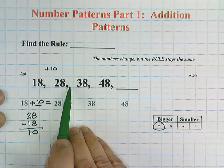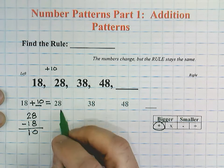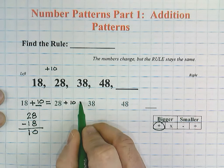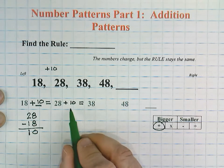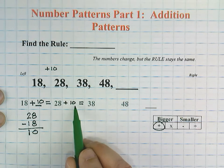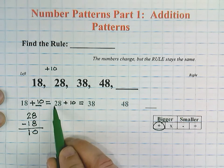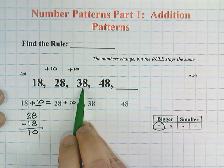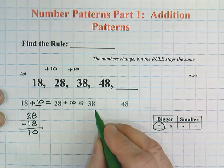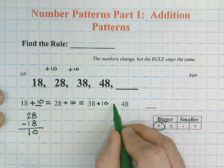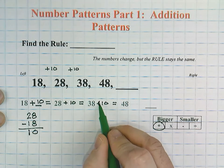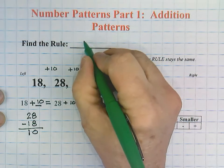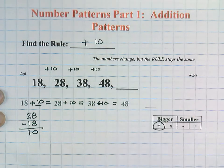When you're doing patterns, you want to make sure that the rule stays the same. I'm going to try it with my next set of numbers. 28 plus 10 equals 38. Using mental math, the 8 and the 0 in the 1s equals 8, and the 2 in the 10s plus 1 would be 3. Same thing between 38 and 48: 38 plus 10 equals 48. Our rule is staying exactly the same. We have found our rule: plus 10 or add 10.